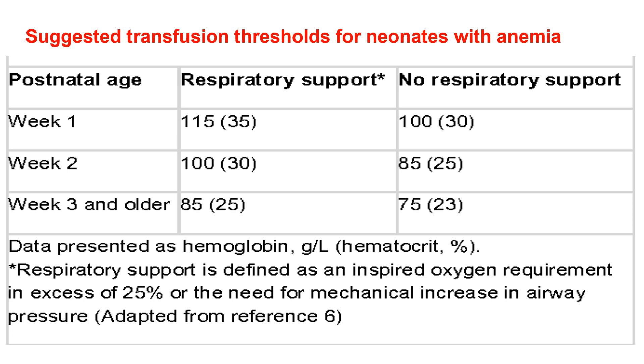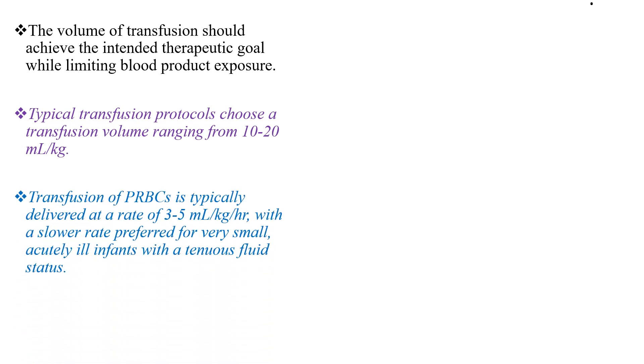If they are not on respiratory support, hematocrit less than 23% is used as a cutoff point for transfusion. The volume of transfusion should achieve the intended therapeutic goal while limiting blood product exposure. Typical transfusion protocols choose a volume ranging from 10 to 20 mL/kg, infused at a rate of 3 to 5 mL/kg/hour, with a slower rate preferred for very small or critically ill infants with a tenuous cardiovascular status.